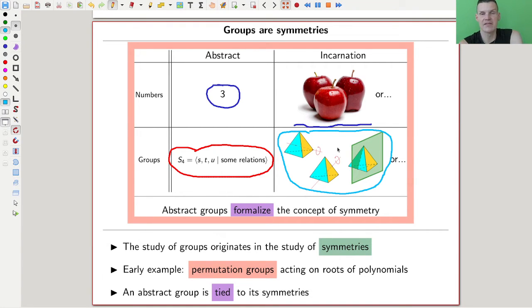So symmetries have been of crucial importance throughout mathematics and the history of science in general, and maybe even the history of humanity. And it's like totally believable that group theory should be important because it's the mathematical formulation of symmetry. And an abstract group is really tied to its symmetries.